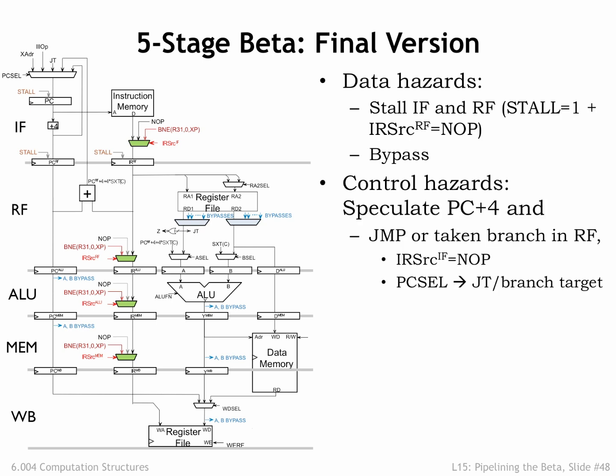To deal with control hazards, we speculate that the next instruction is at PC plus 4. But for jumps and taken branches, that guess is wrong, so we added a provision for annulling the instruction in the IF stage.